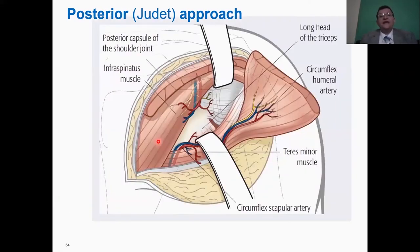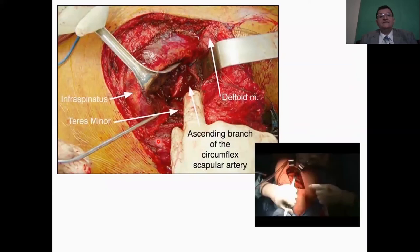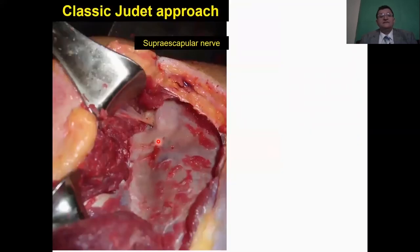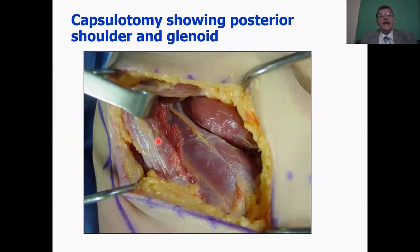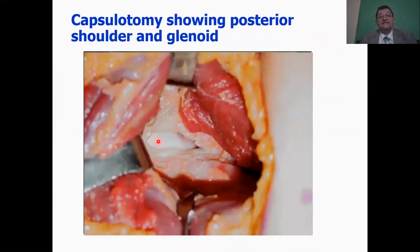Now this plane is developed between the infraspinatus and the teres minor. And we can expose the posterior capsule, the body, the neck and through the same plane. And this is again the suprascapular nerve and vessels going into the infraspinatus. And you can do a capsulotomy to see inside the shoulder joint and identify the glenoid itself.